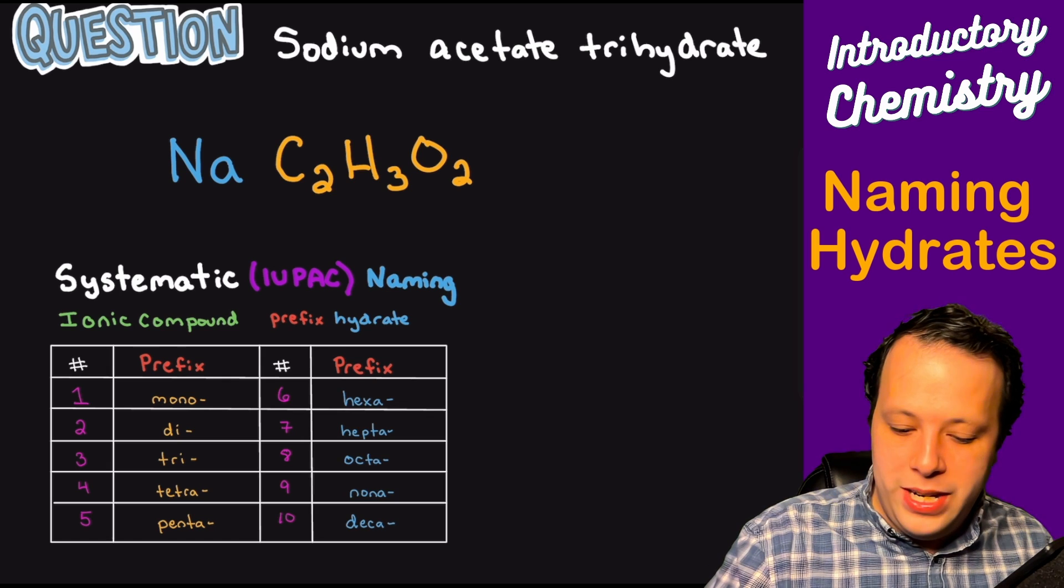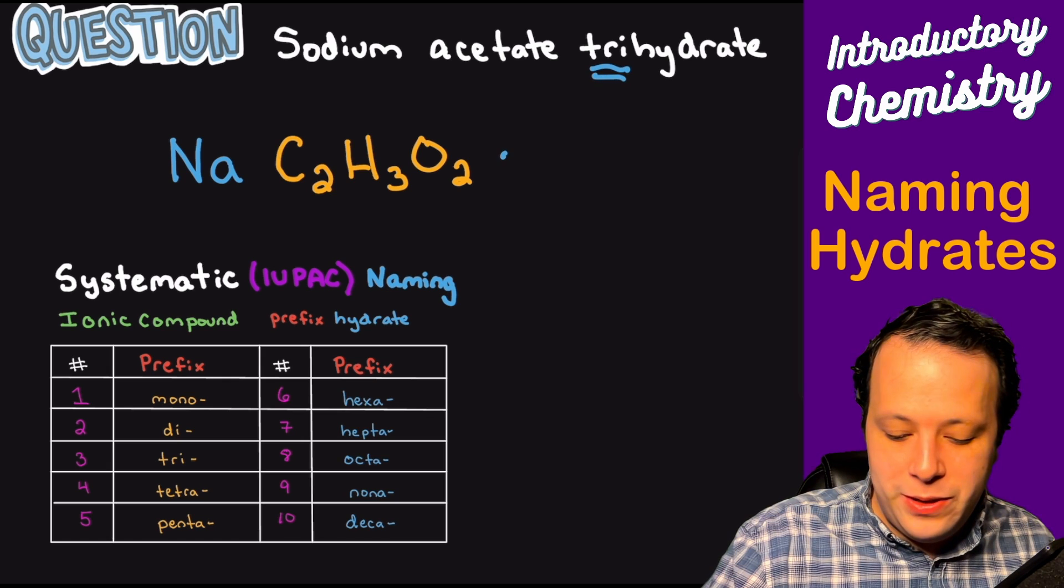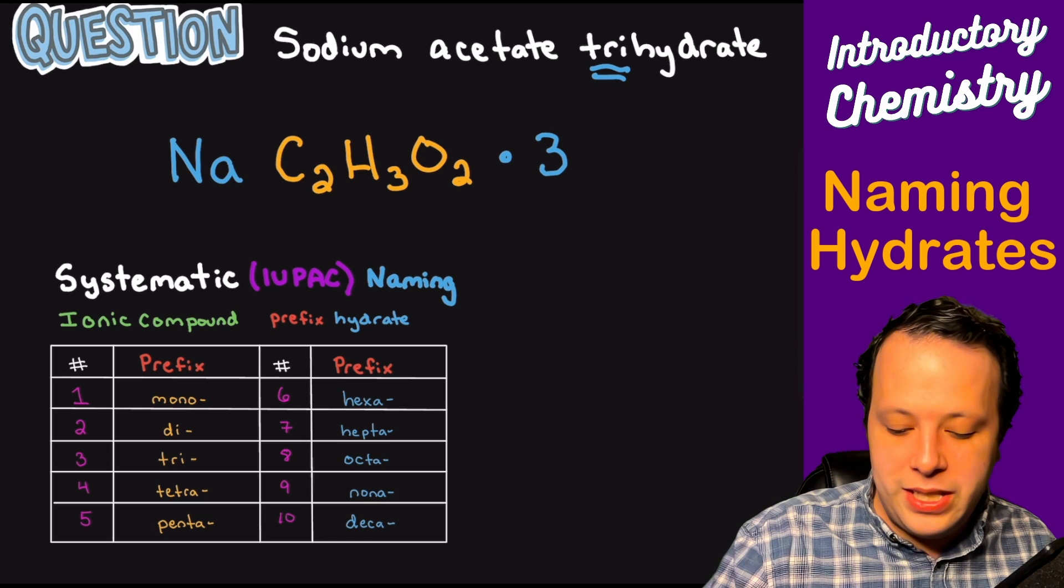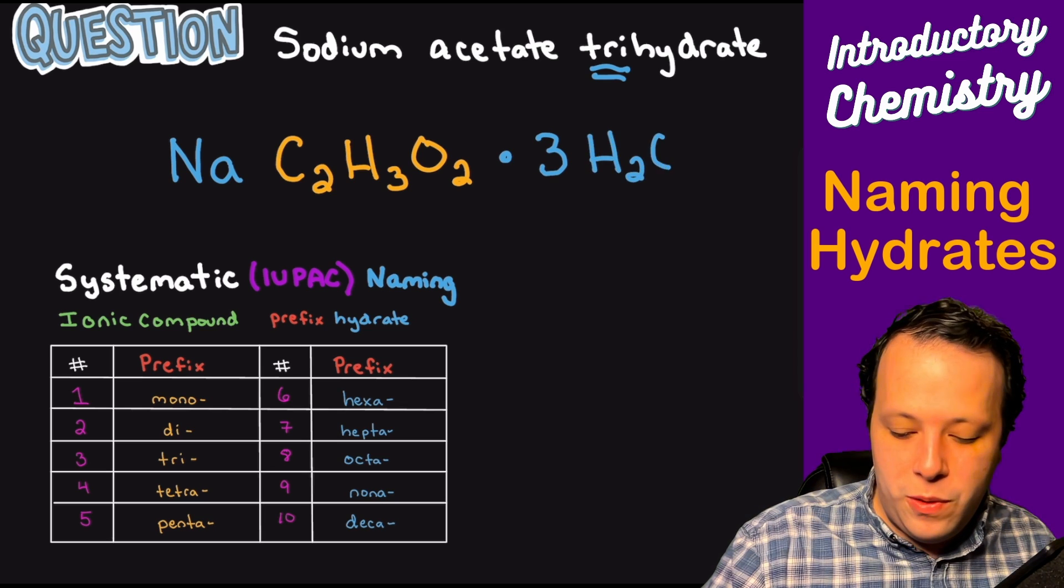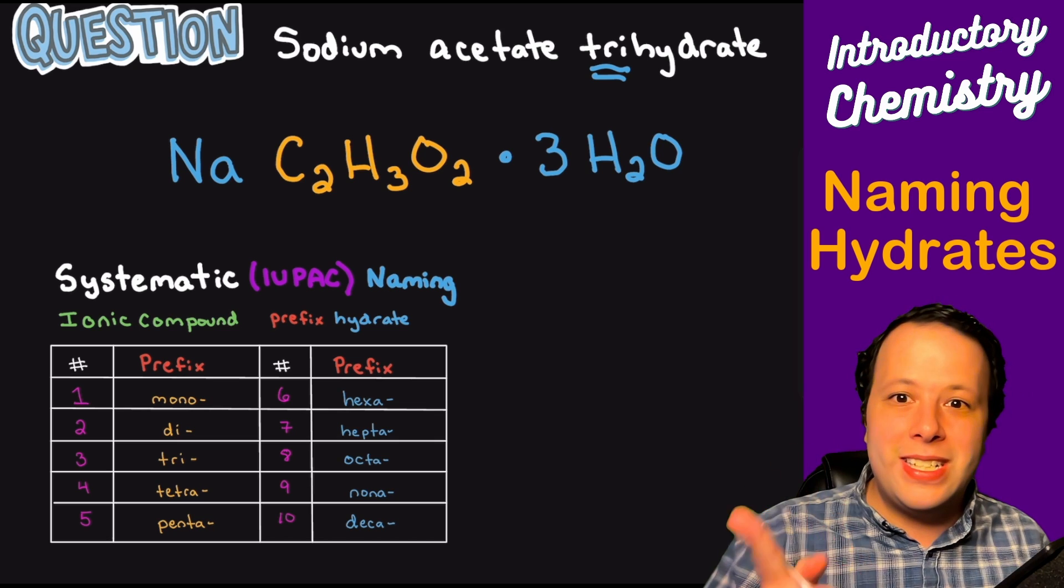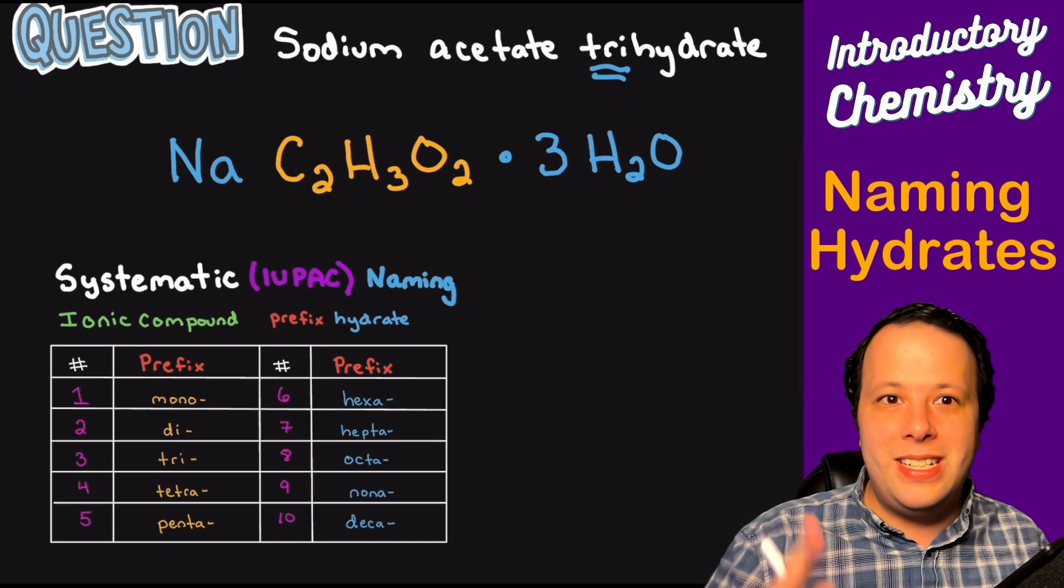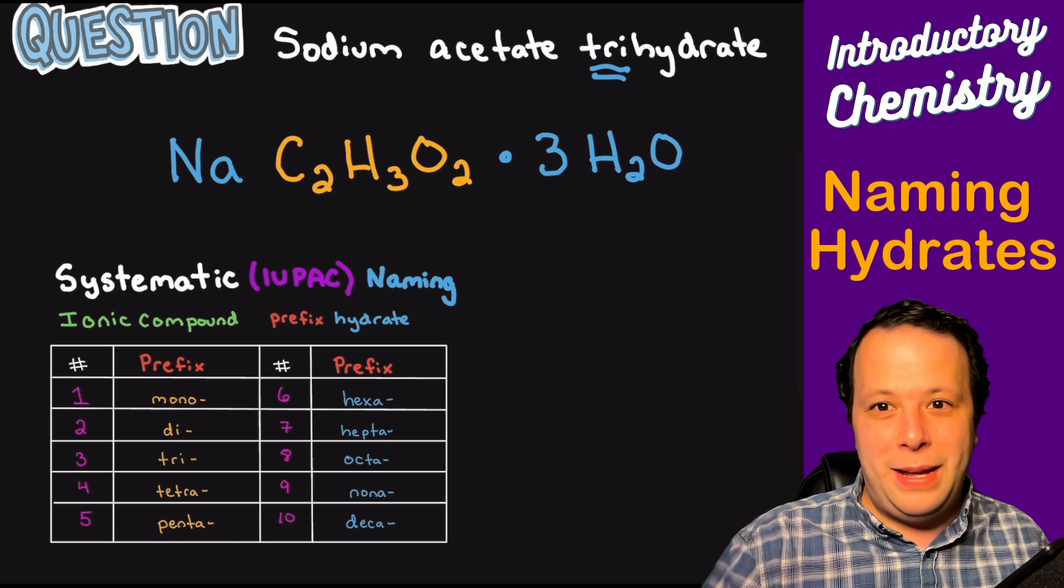Now being that we have three waters that we see here, there's that tri symbol. So we'll use the little dot, put the number three, and then put the water molecule after. So this is letting you know that you have three waters attached to sodium acetate in this example.